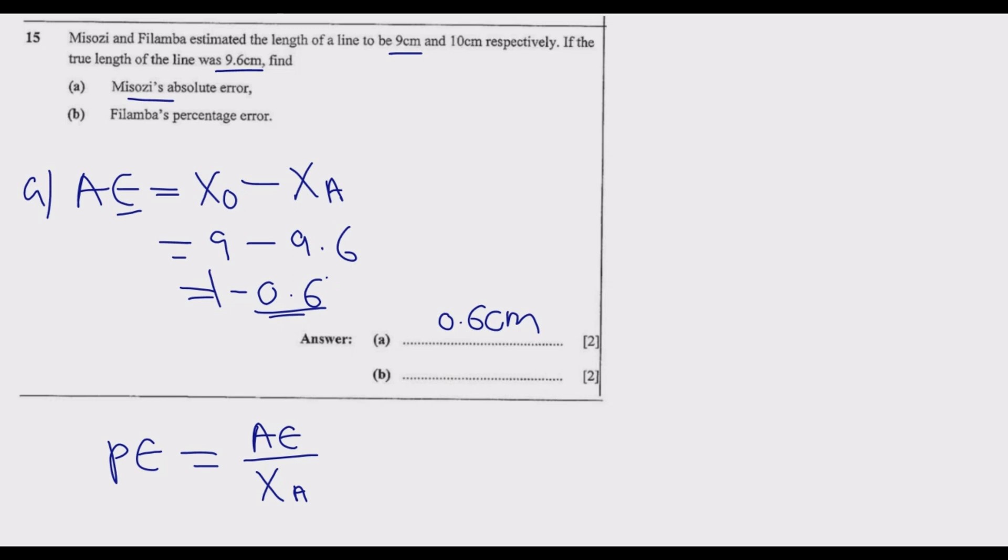We can find the absolute error for Filamba. Filamba's measurement was 10 centimeters, so 10 minus the true value of 9.6. Ten minus 9.6, we get 0.4. So 0.4, because it's already positive, we don't have to worry.